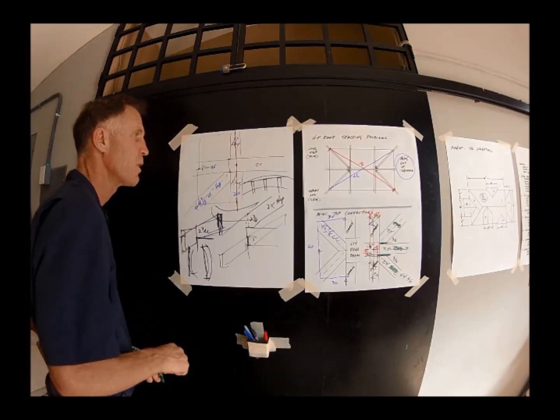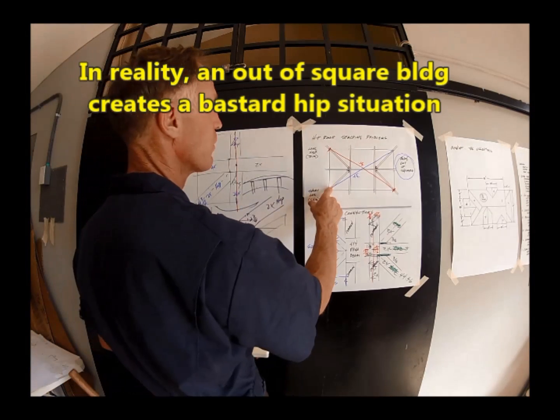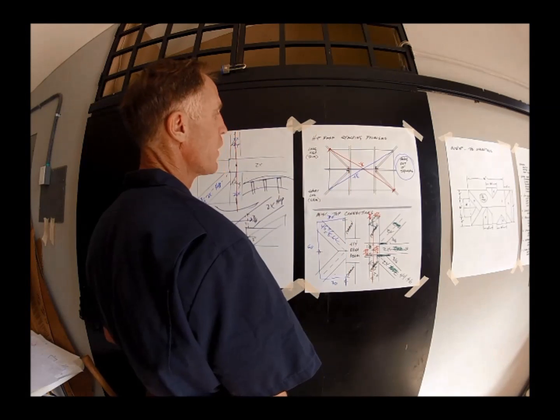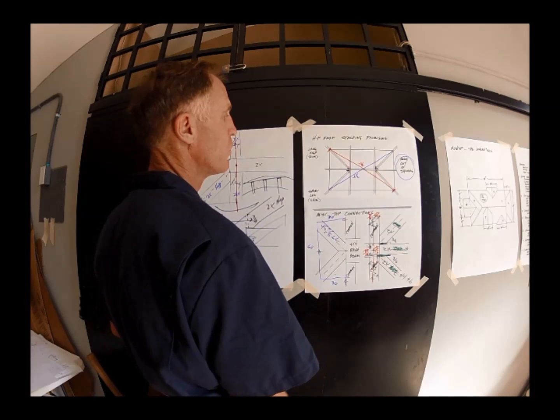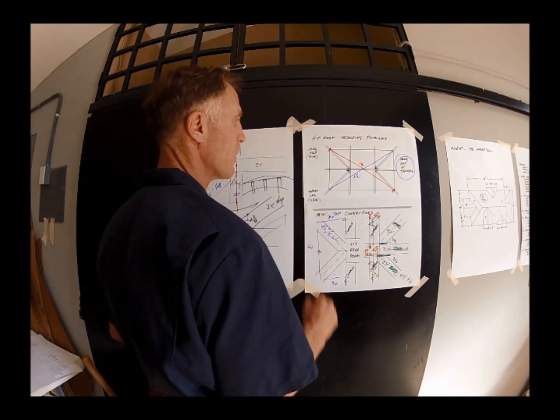I think that pretty much covers it. Really in reality guys, what you actually created is bastard hips here. Anytime it's not a true 90 degree corner you have a bastard. It'll work on most cases, you know they're never too far gone that you can't fix them in the method I'm talking.